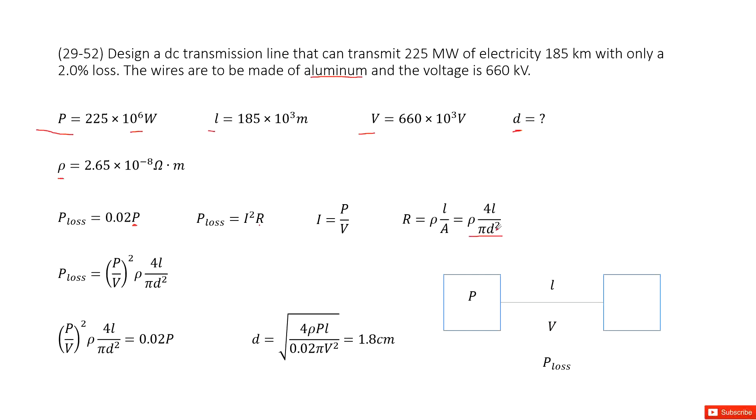The second one we look at the current. As we can see the total power is given, the voltage on this cable is given. So we can write it as P over V to get the current there.